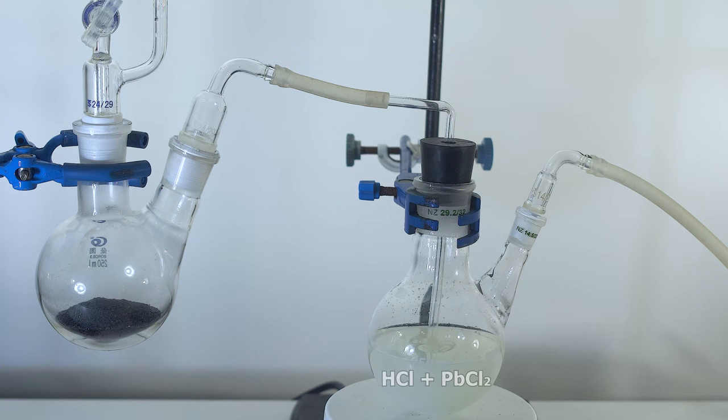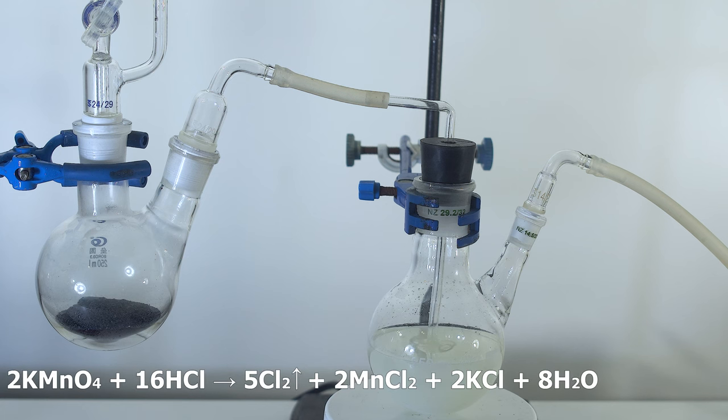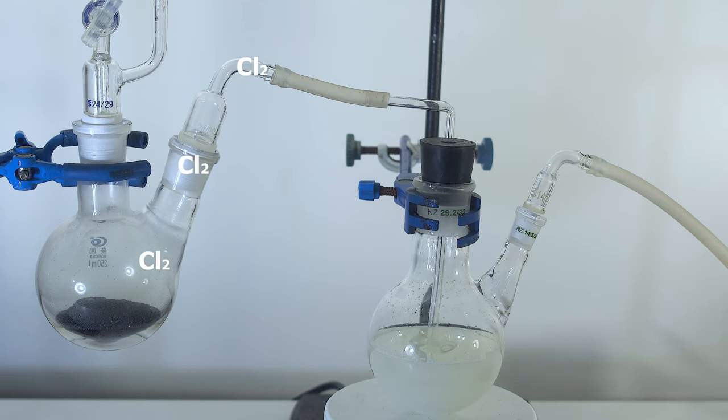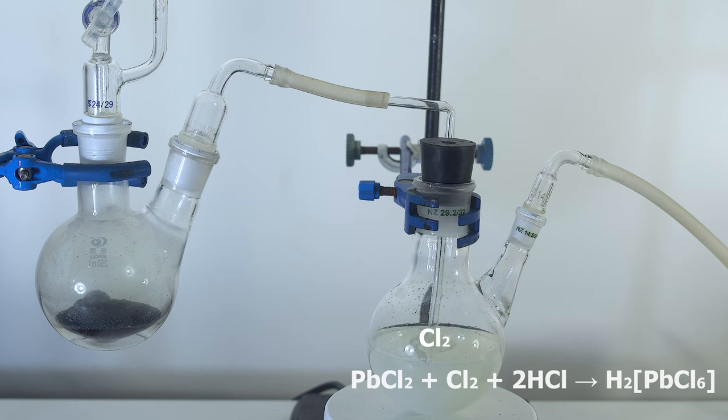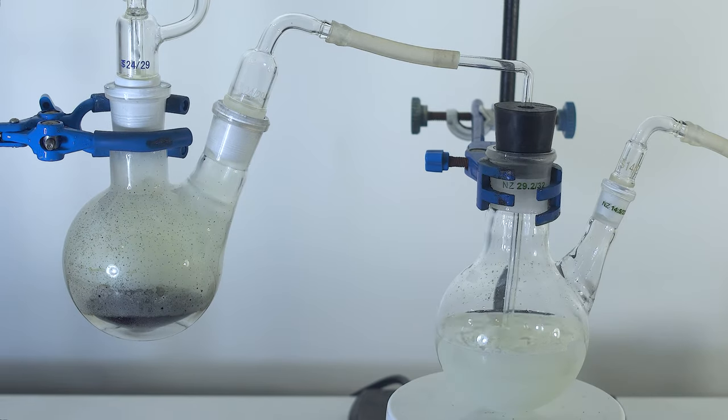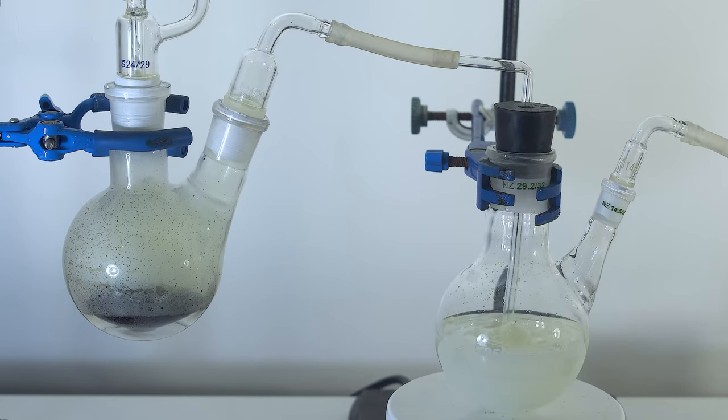So let's start our synthesis with adding hydrochloric acid to potassium permanganate. Chlorine that evolves as a result of the reaction flows into the flask with lead dichloride, where it oxidizes lead to oxidation stage plus 4, thus forming chloroplumbic acid. It's clearly seen by the color change of the contents of the flask.